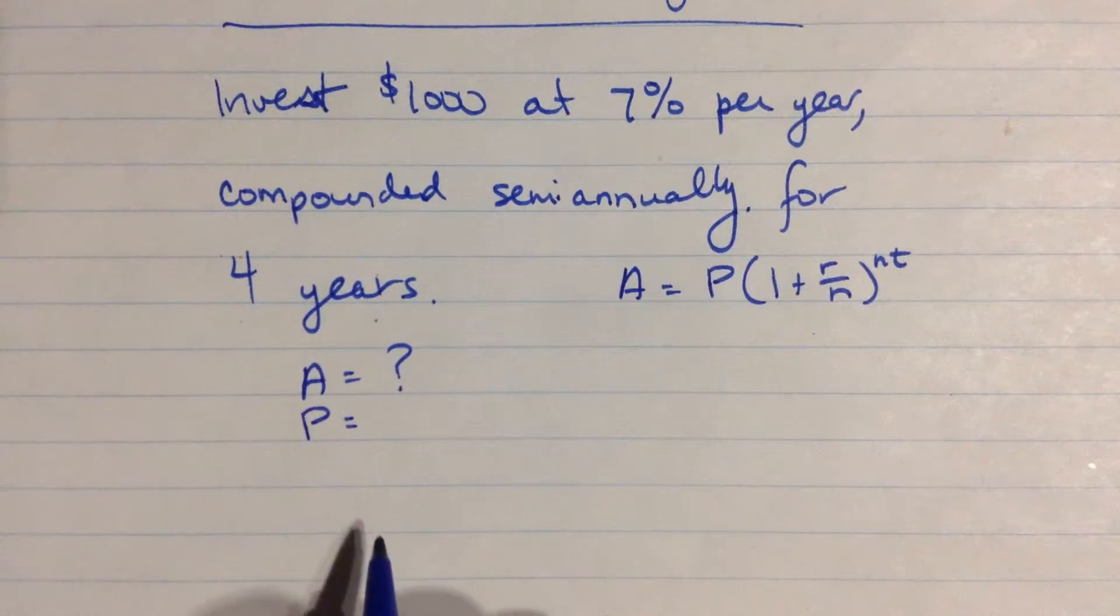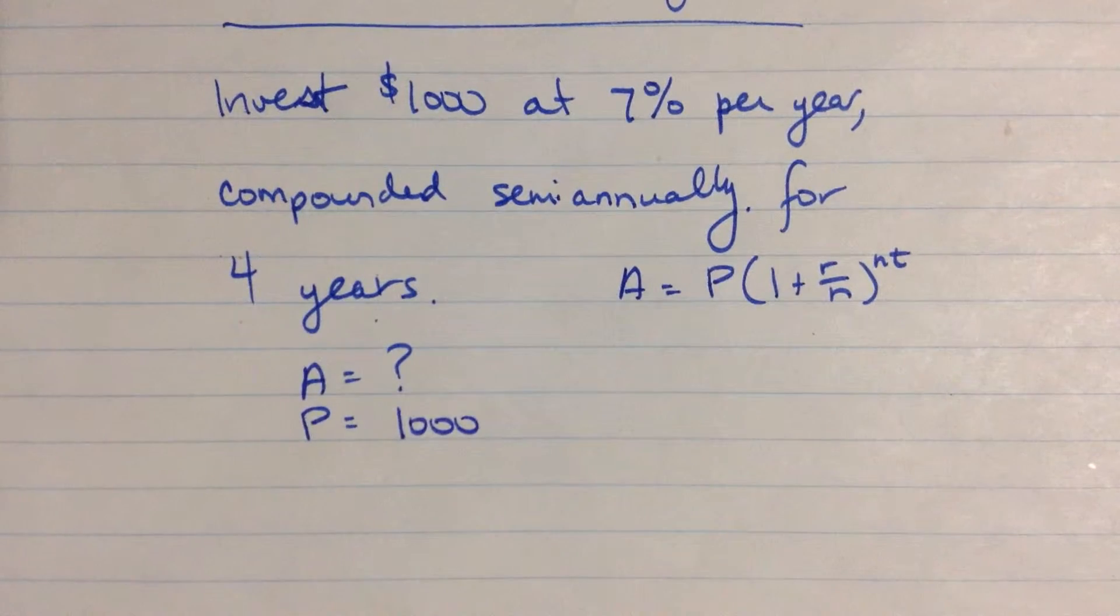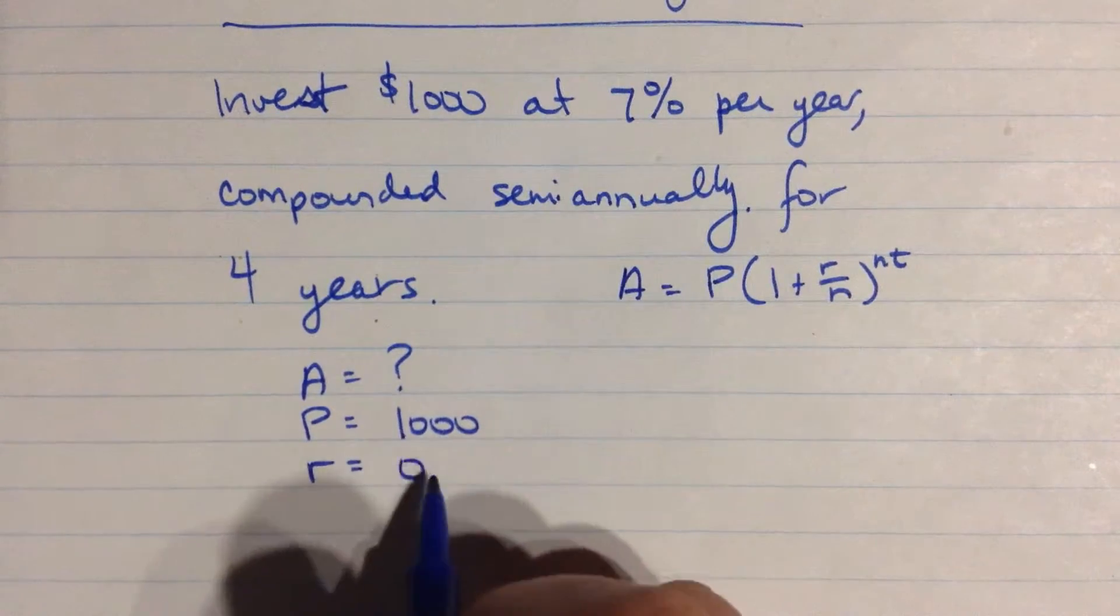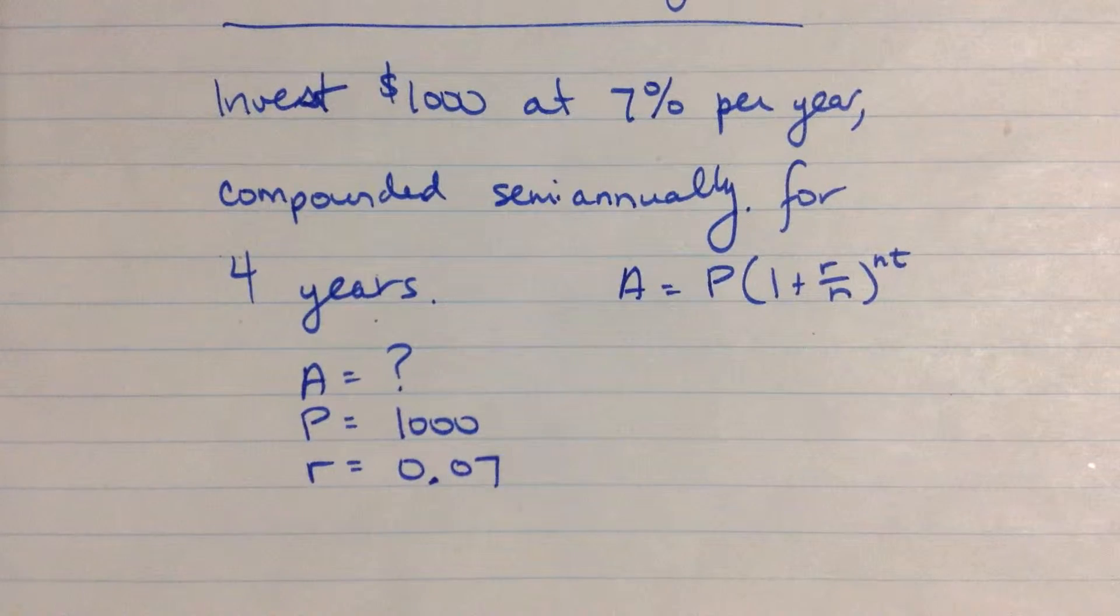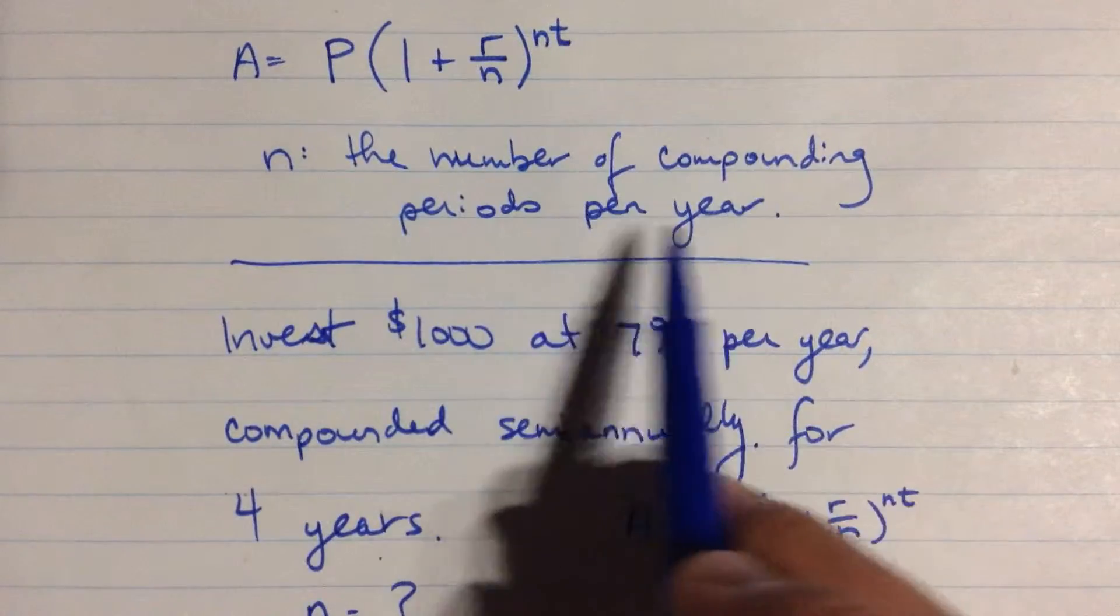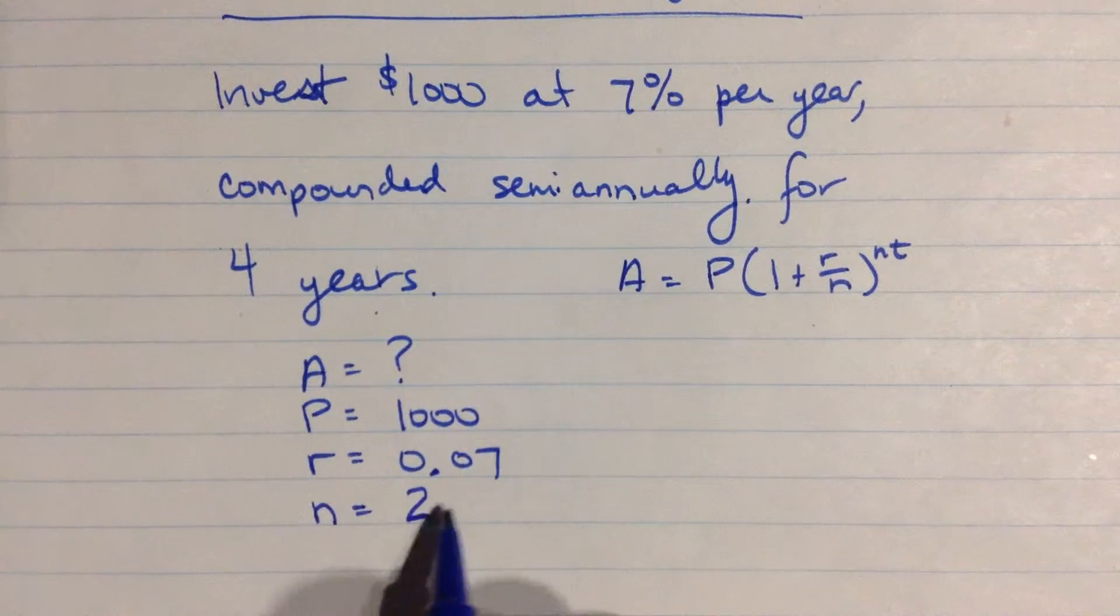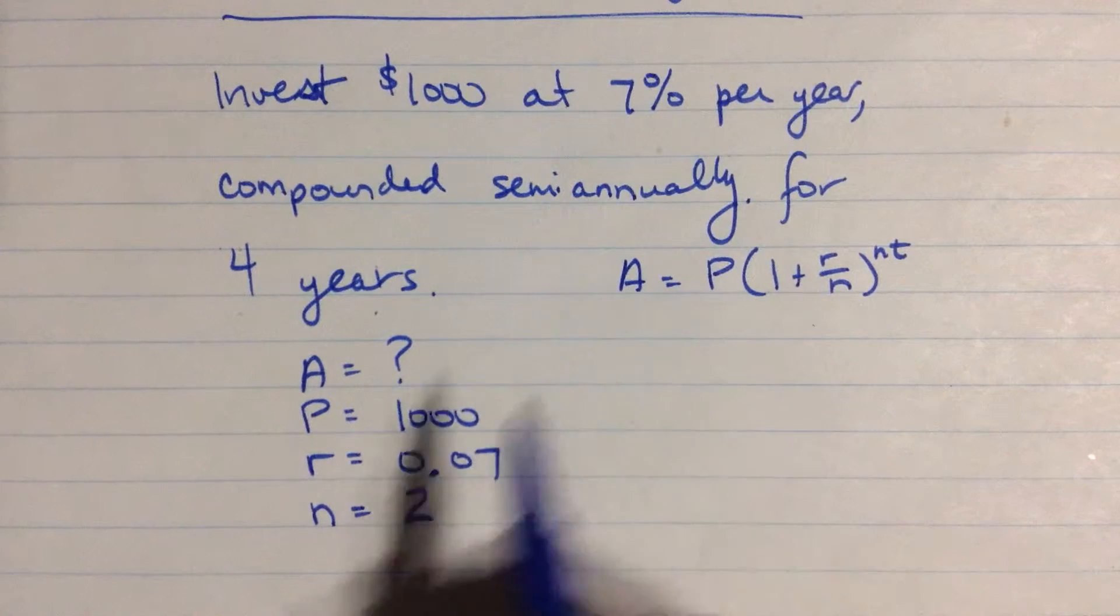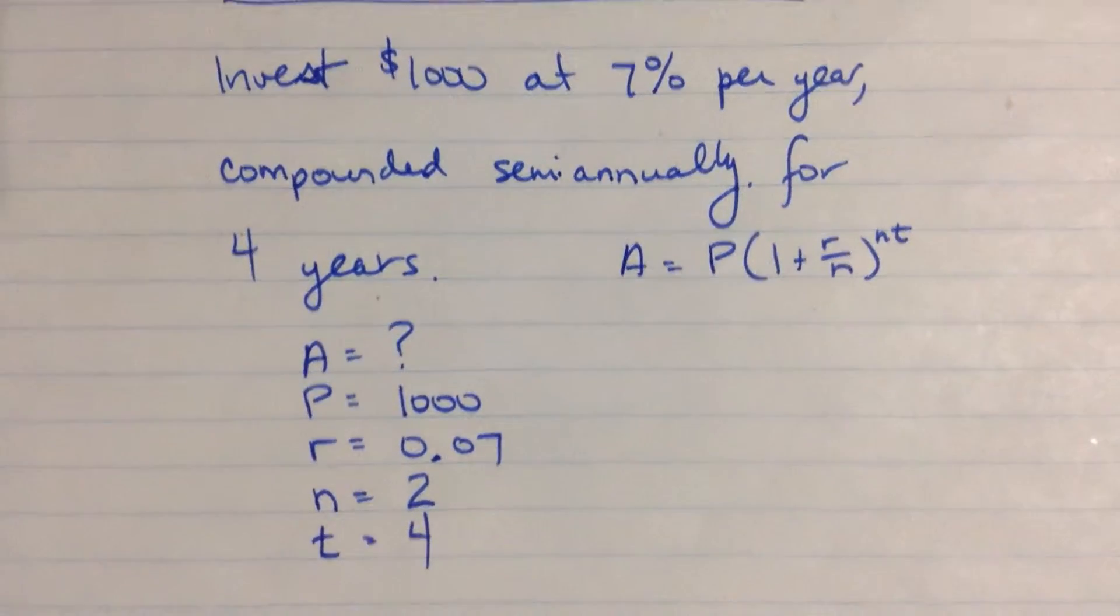P, the principal or the present value, the amount at the beginning, is 1,000. R is 7%, or we will write it as a decimal, 0.07. N, well, we're compounding semi-annually, that is the number of compounding periods per year is 2. 2 times per year is semi-annually. And T is the number of years, in this case that's four years.